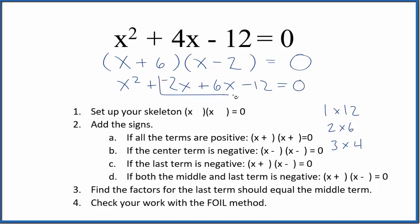These are similar, we can combine them. So we end up with x² plus negative 2x plus 6x. That's just 4x minus 12 equals 0. This is the same as we started with. That means we've done this part correctly.